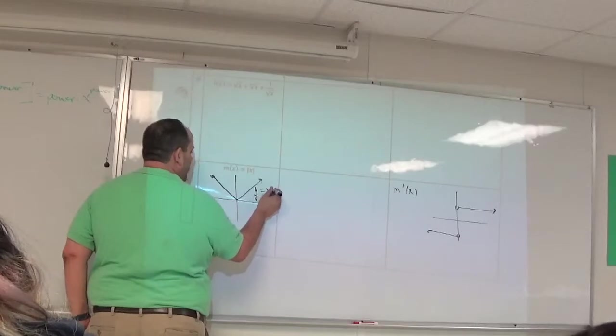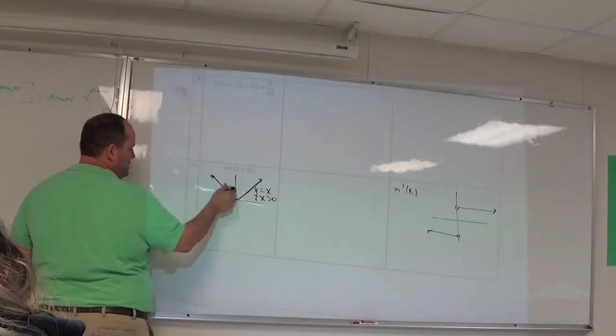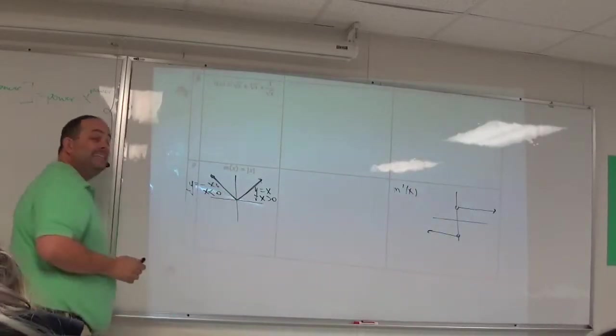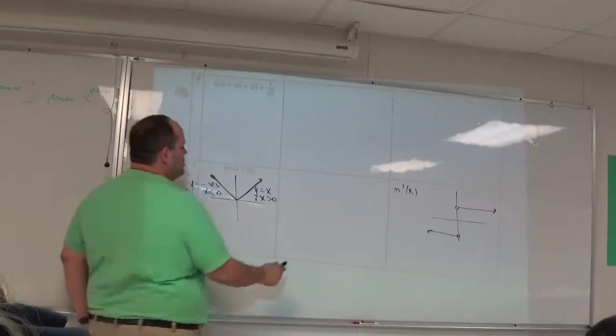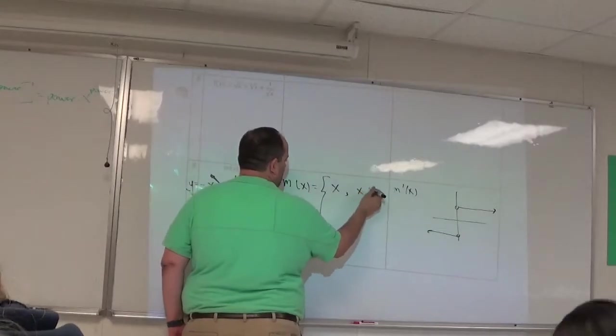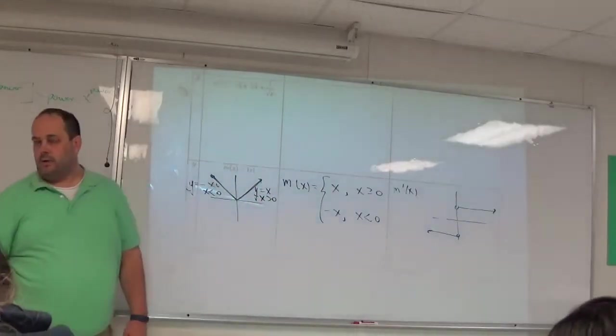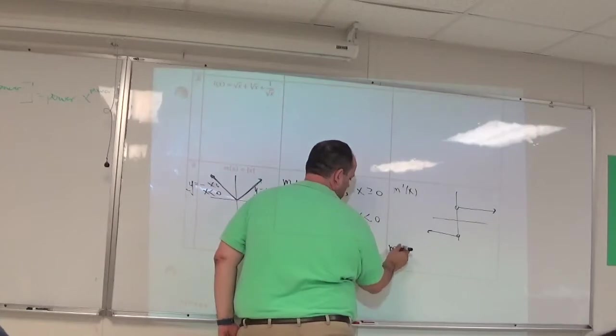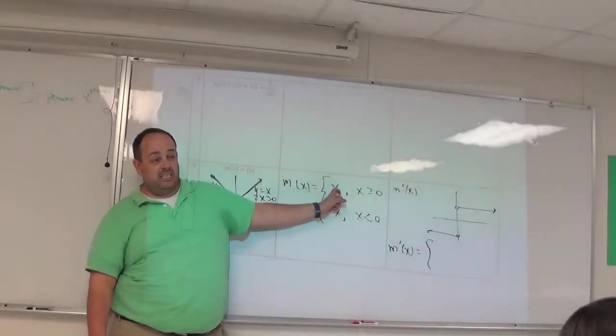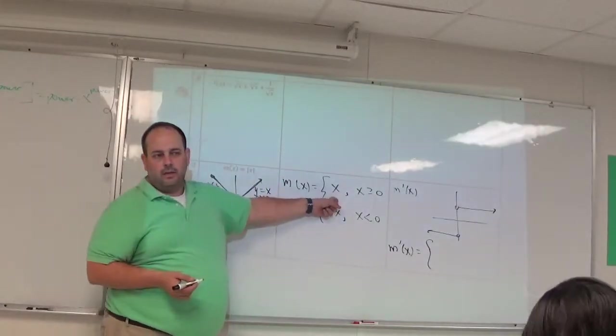It's equal to the graph of y equals x on this side for x is greater than zero. But what about this equation? Y equals negative x? That's equal to y equals negative x for x less than zero. What I can do is I can rewrite m of x as a piecewise function. It's x for x greater than or equal to zero. It's negative x for x less than zero. What's the derivative of x? The derivative of just x? One.